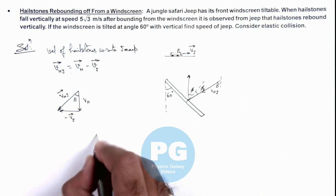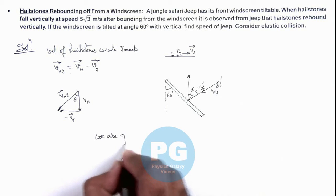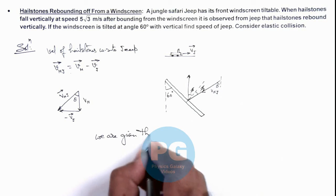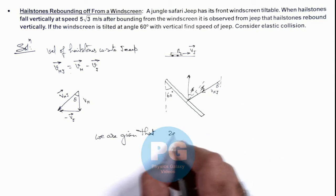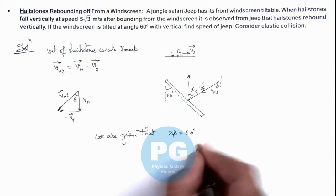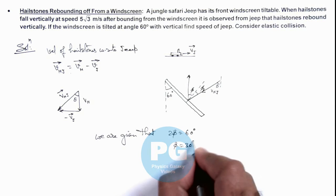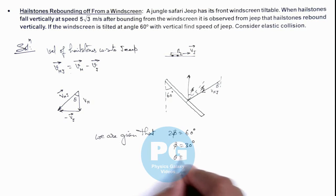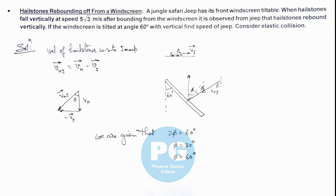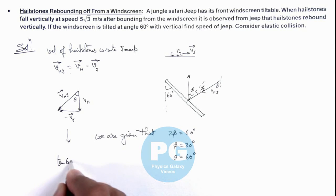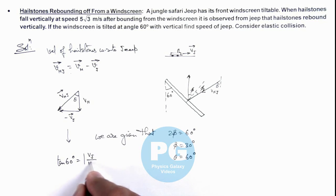Here we are given that 2φ equals 60 degrees, which means φ equals 30 degrees. So theta must also be equal to 60 degrees. From this triangle, tan 60 degrees equals the magnitude of the velocity of the jeep divided by the velocity of the hailstones.